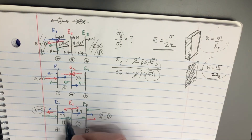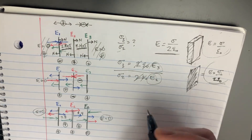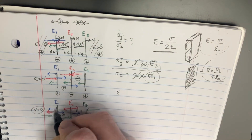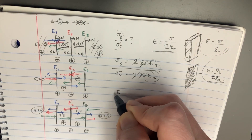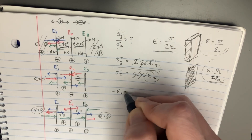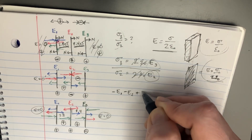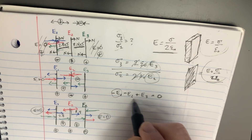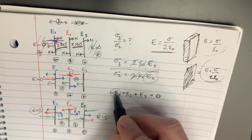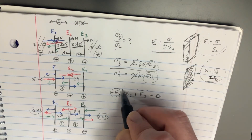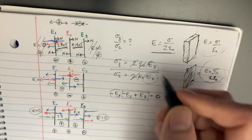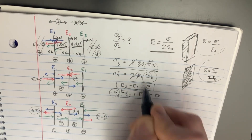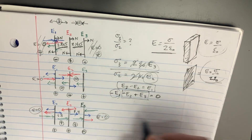We need to plug in the numbers. On the left side, following the arrows, we get negative E1 minus E2 plus E3 equals zero. We need to solve for E1 so we can eliminate it from future equations. So we get that E3 minus E2 equals E1. That's what we'll use for E1 going forward — we can get rid of it and work only with E3 and E2.